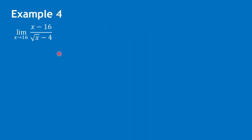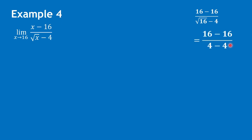For example 4, let's have the limit of x minus 16 over the square root of x minus 4 as x approaches 16. To show that this is an indeterminate form, let us substitute 16 for x, giving us 0 over 0. To get the limit, we're going to do rationalization. Therefore, we need to multiply this function by the conjugate of the denominator.